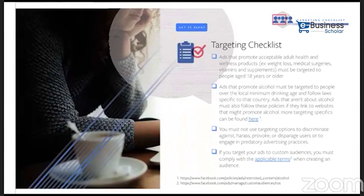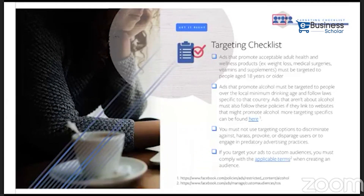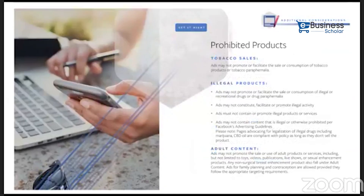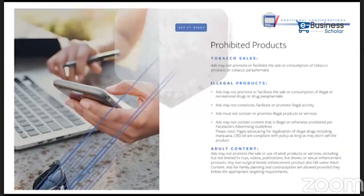Targeting restrictions on Facebook include: products like weight loss supplements and vitamins require age-restricted targeting and lead campaign rules. Alcohol advertising is banned in certain markets. Provoking or discriminatory targeting is prohibited. Prohibited products include: illegal products like guns, drugs, CBD oil, and marijuana cannot be sold through Facebook ads. Adult content, sexual enhancement products, or sex toys cannot be sold or even promoted on Facebook.